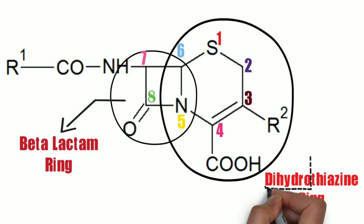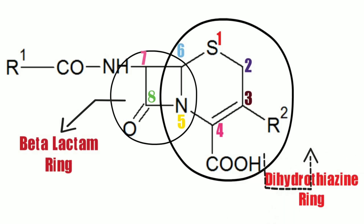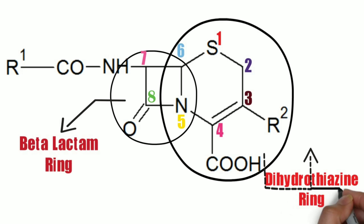Now the question arises: why is it named dihydrothiazine? As you can see, two hydrogen atoms are removed from the third and fourth position to form a double bond, and one sulfur atom is present at the first position. That's why it is named dihydrothiazine.